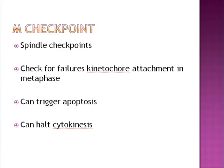The M checkpoint is a spindle checkpoint — you're looking for errors in attachment. The chromosomes actually attach to the mitotic spindle, which is made of microtubules, at points called the kinetochore, located at the centromere of each chromosome. Failures in attachment can cause lots of problems — cells can end up with too many or too few chromosomes. A famous example is trisomy 21, where during meiosis the cell gets too many copies of chromosome 21, which is what causes Down syndrome.